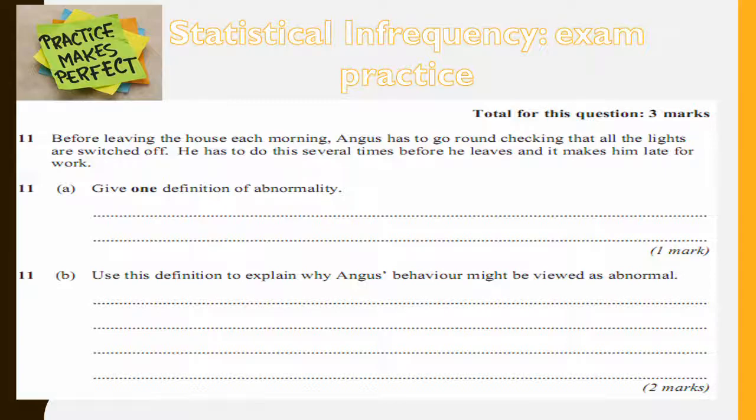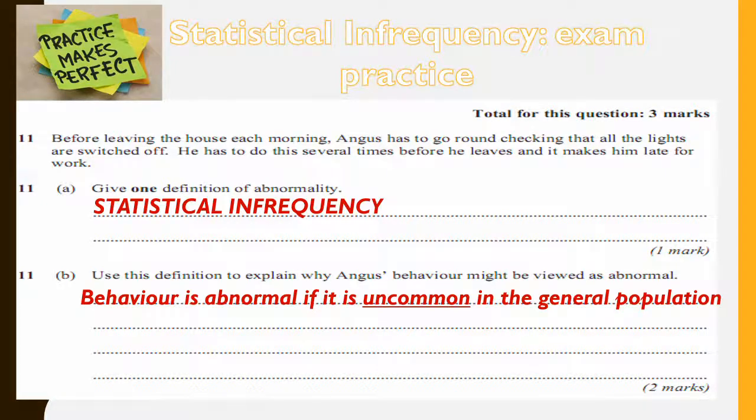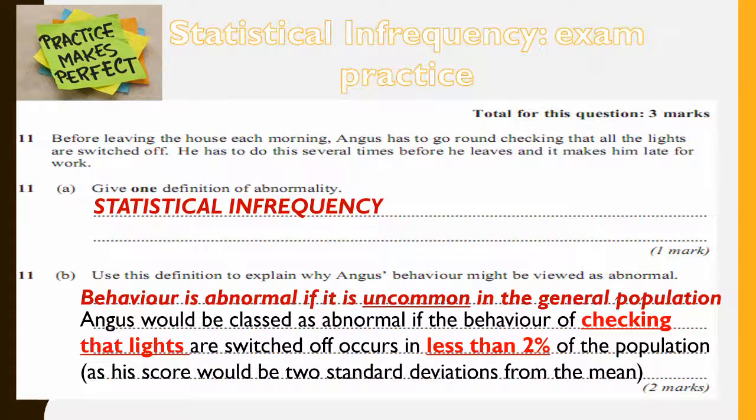We're going to have a look at the Angus stimulus. It says: before leaving the house each morning, Angus has to go around checking that all the lights are switched off. He does this several times before he leaves and it makes him late for work. Give one definition of abnormality. We're going to go with statistical infrequency. Part B: use this definition to explain why Angus's behavior might be viewed as abnormal. Behavior is abnormal if it is uncommon in the general population. Angus would be classed as abnormal if the behavior of checking that lights are switched off occurs in less than 2% of the population, as his score would be two standard deviations away from the mean. If you say that, that will get you your two marks. Please make sure you've got that answer written in.